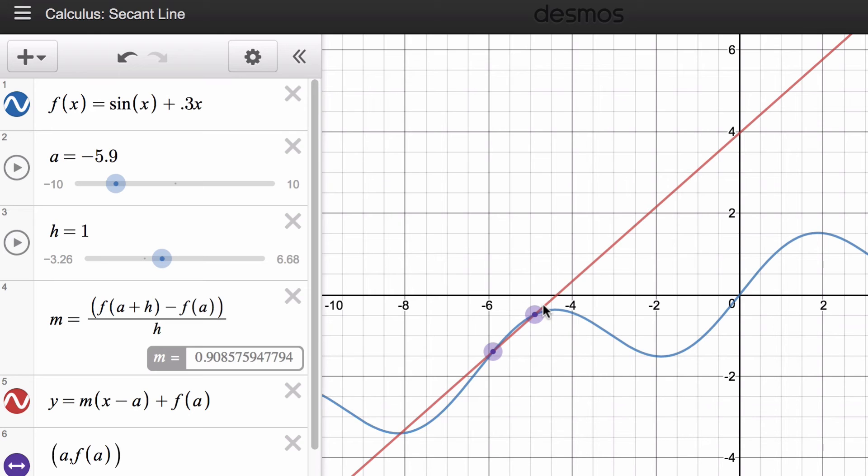So derivative approximates how fast something's changing at a given point, but again, the best we can do is approximate it by taking two points or maybe sometimes a succession of points really close to one another, so we can try to approximate the slope of the tangent line or derivative or instantaneous rate of change. And that's it.